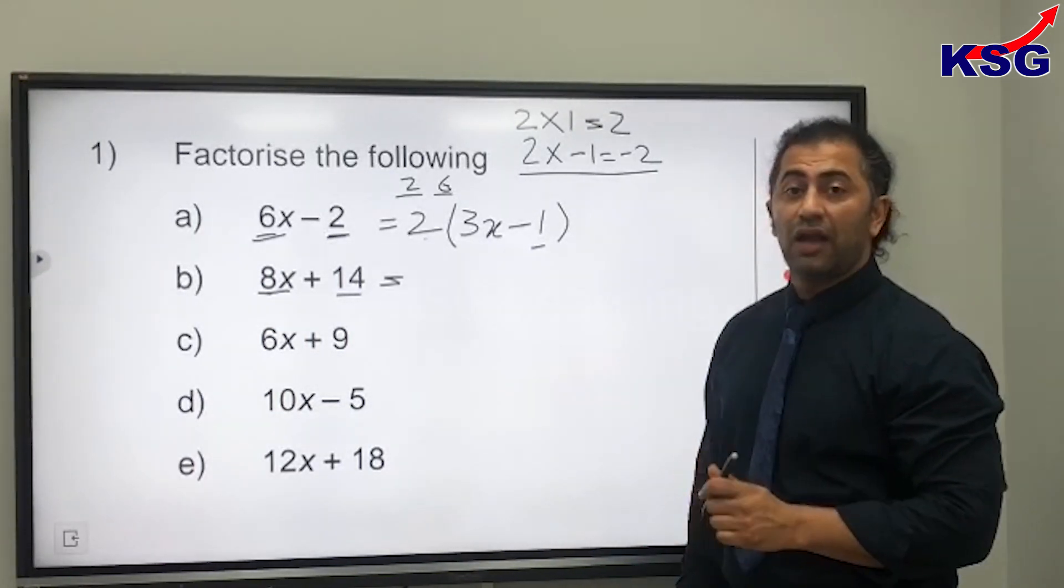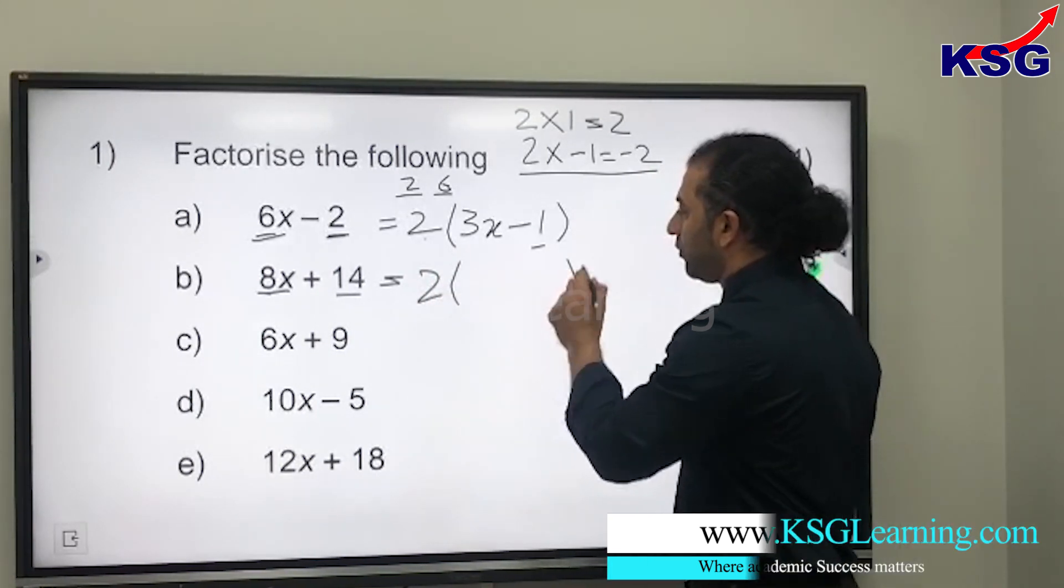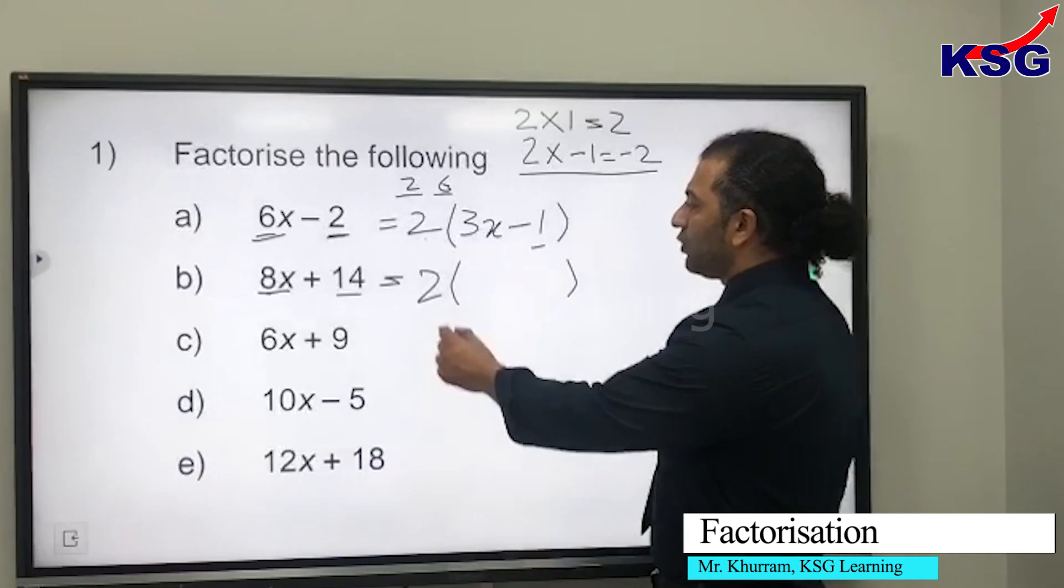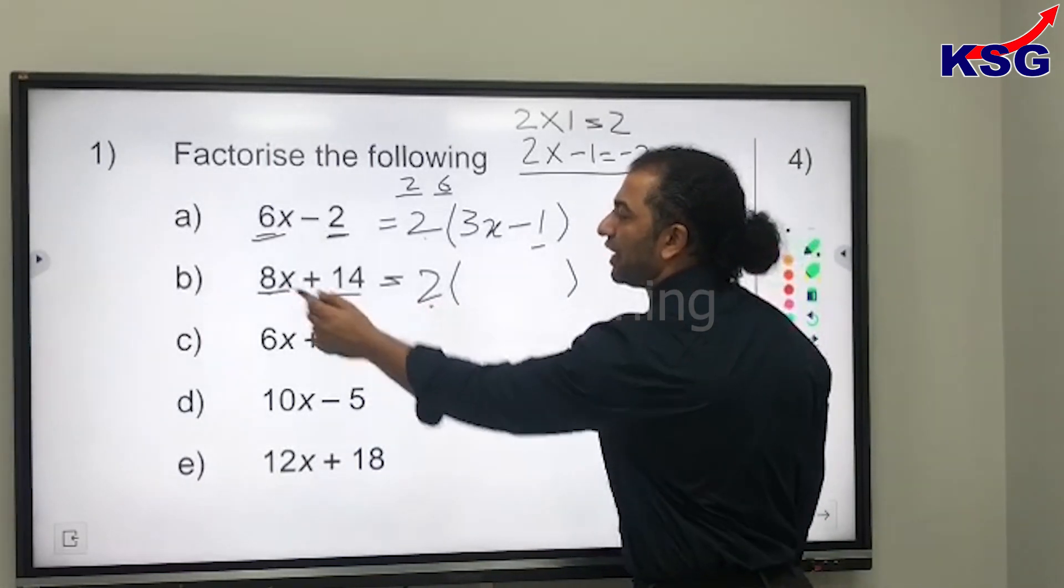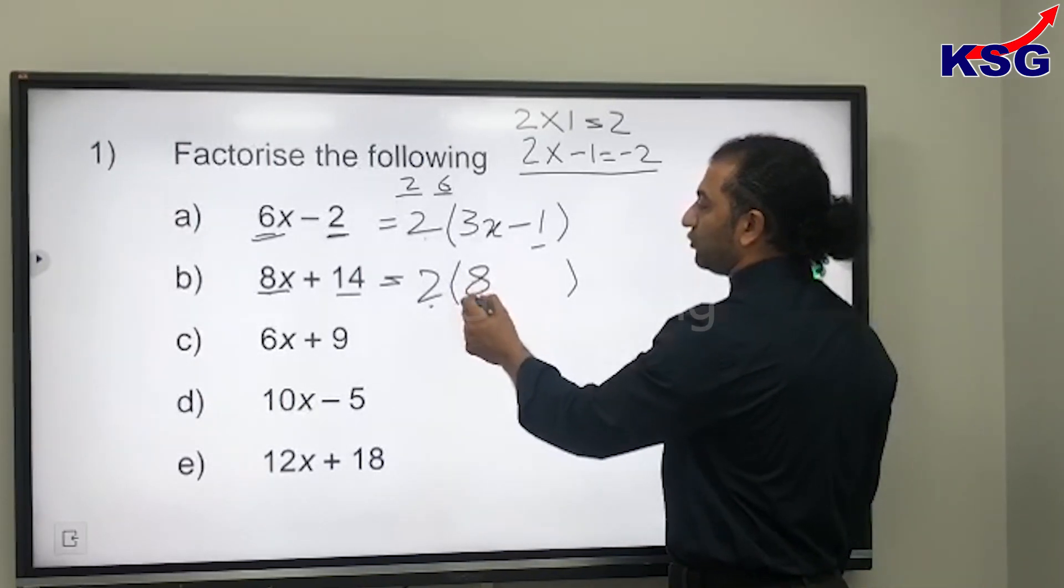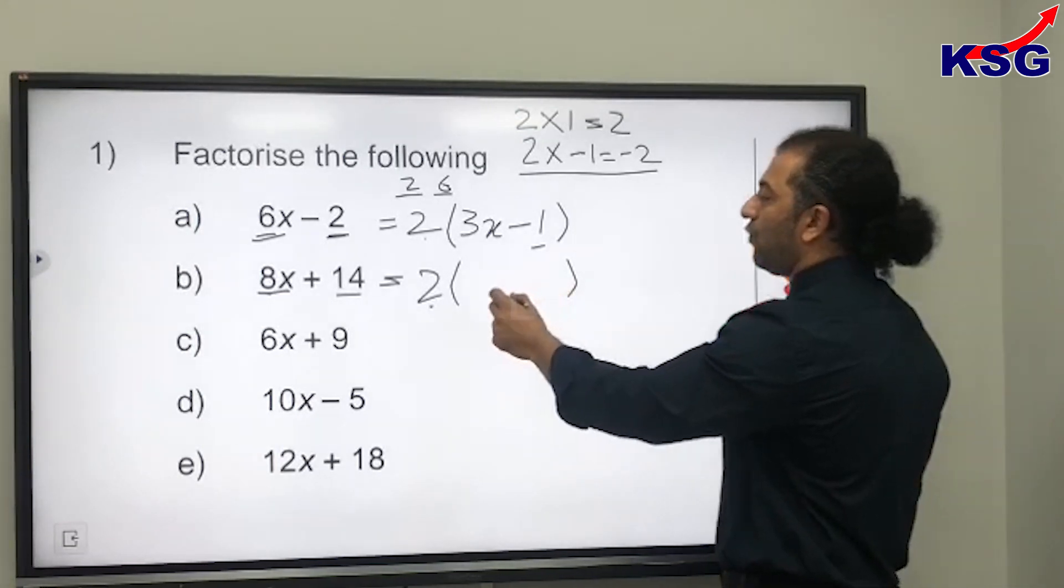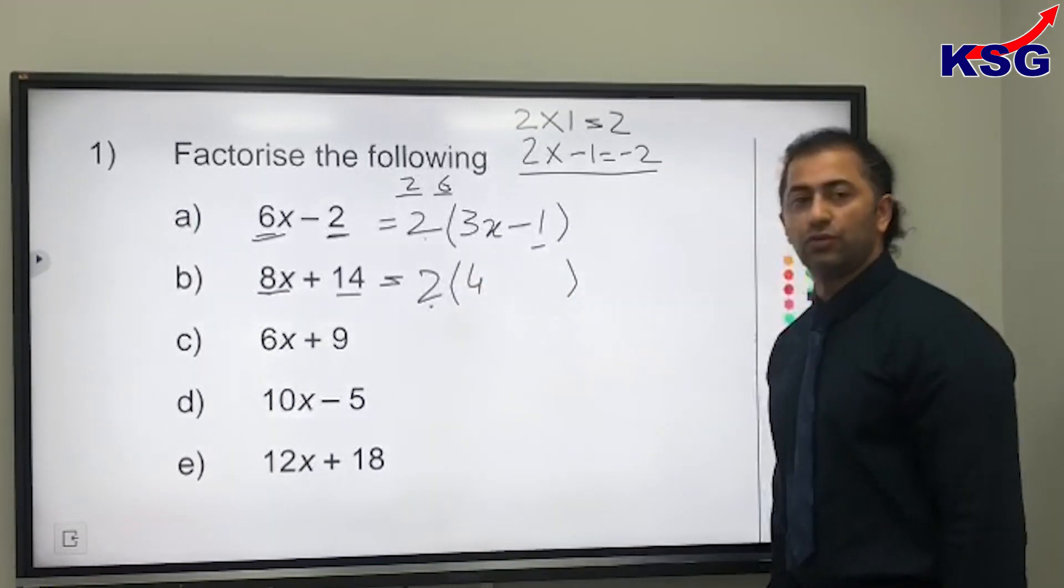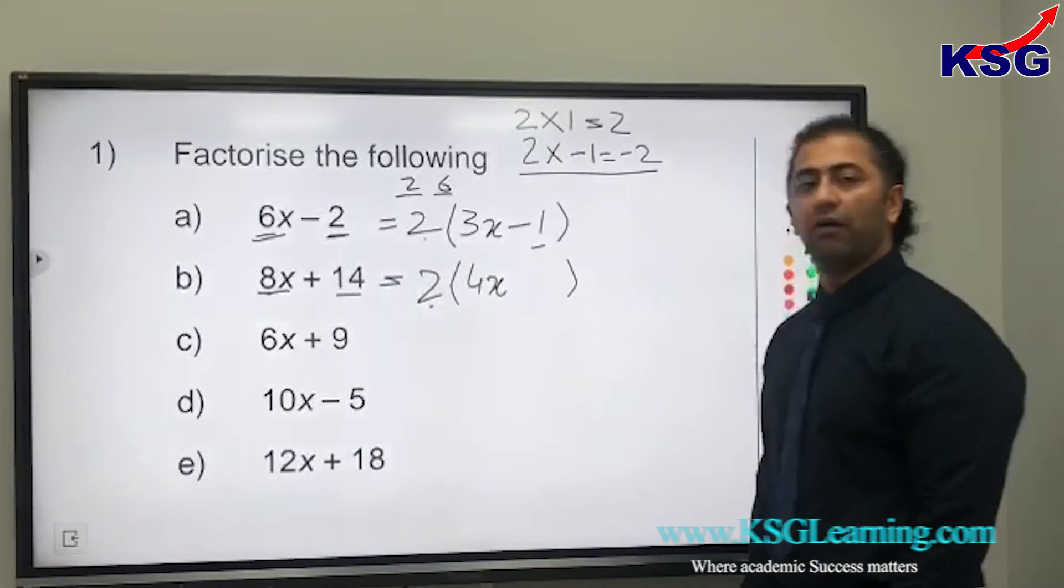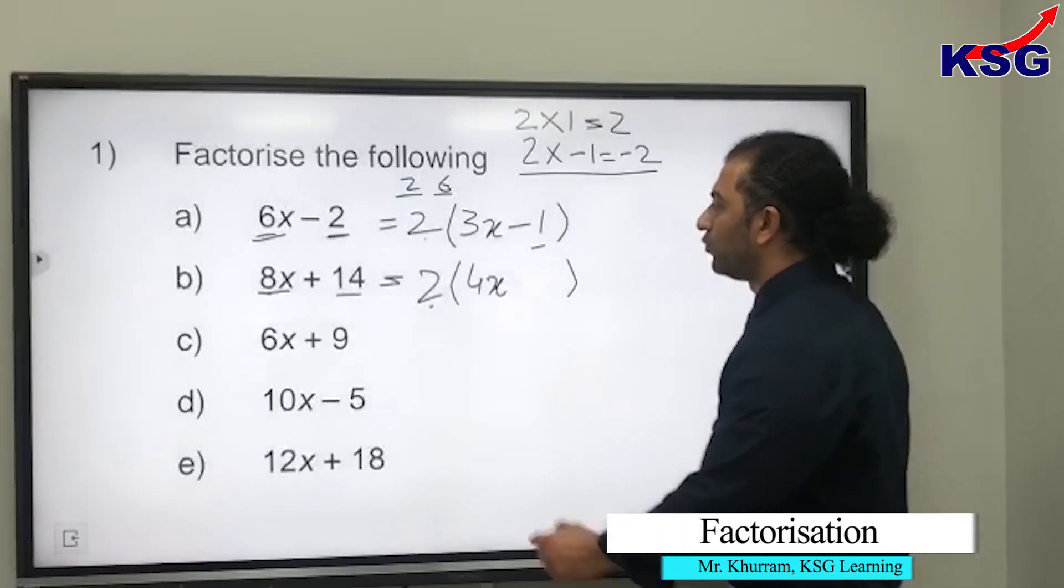So we take that 2 out and our bracket starts. Second step: we need to find out the number which we times by 2 to get 8. That's 4 times 2, which is 8. And 8x has x as well, so that's our second step complete.